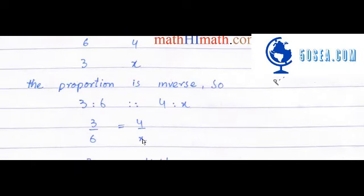تو جب ہم proportion کی form میں لکھتے ہیں تو یہاں پر three ratio six proportion four ratio x. So three over six is equal to four over x.